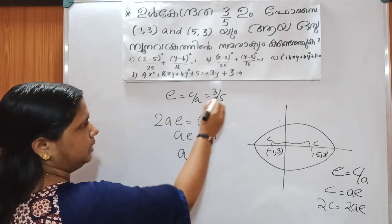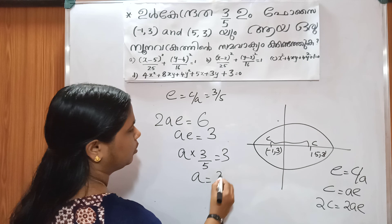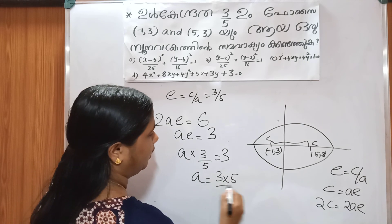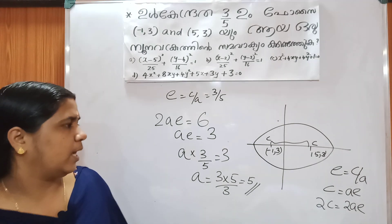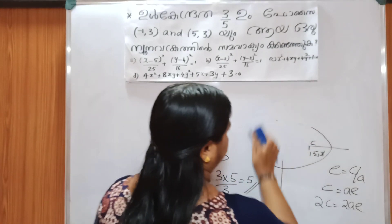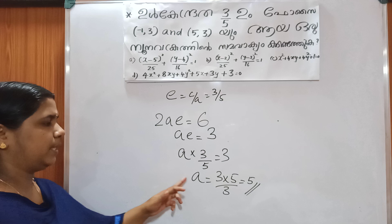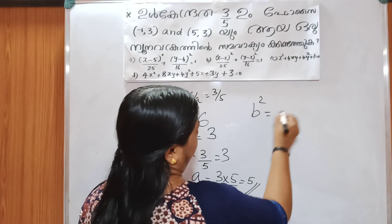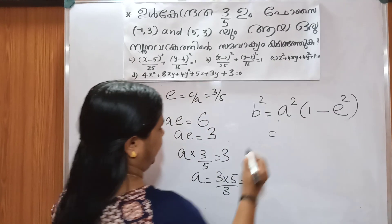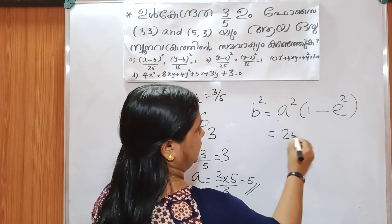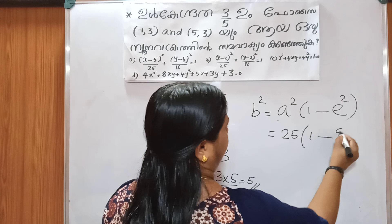ae is equal to 6 by 2, which is 3. And e is equal to 3 by 5. So a is equal to 3 divided by e, which is 3 divided by 3 by 5, giving a equals 5. Then b squared equals a squared minus c squared equals 25 minus 9 equals 16, so b equals 4.